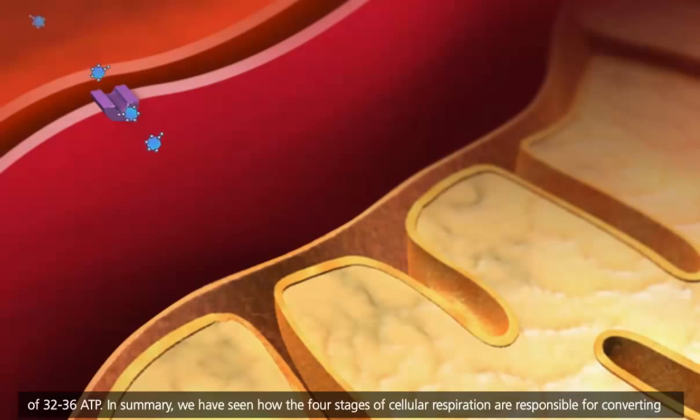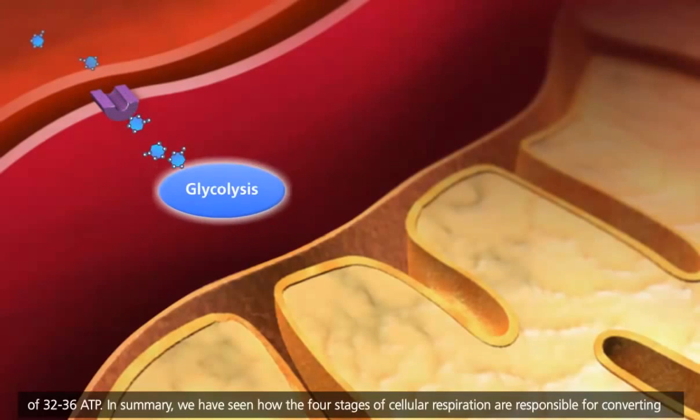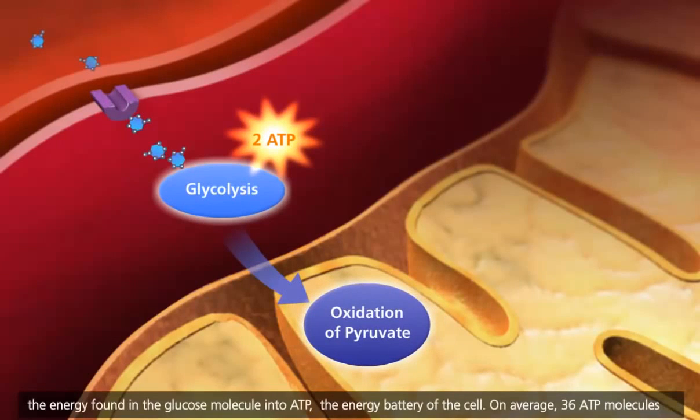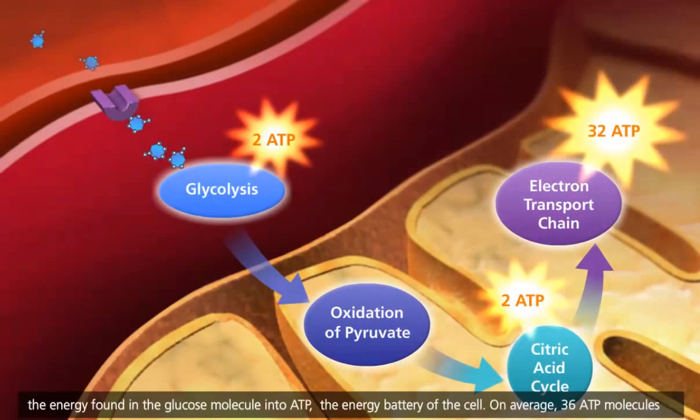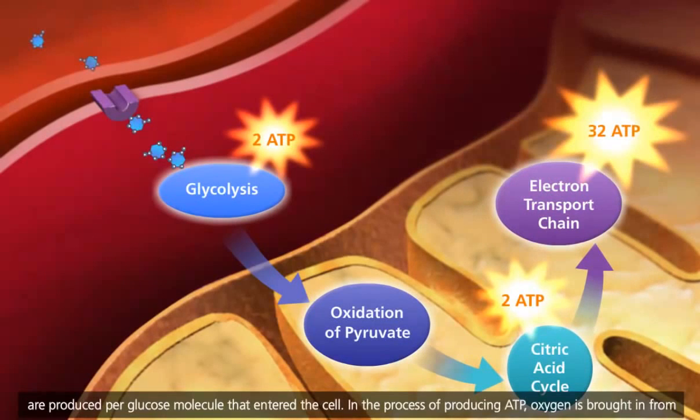In summary, we have seen how the four stages of cellular respiration are responsible for converting the energy found in the glucose molecule into ATP, the energy battery of the cell. On average, 36 ATP molecules are produced per glucose molecule that entered the cell.